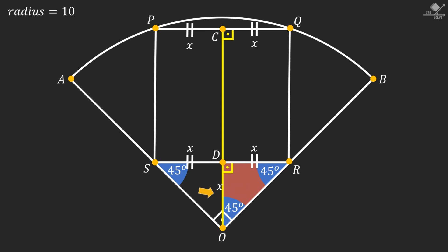That makes line segment DO also X units. We know that side length of the square is 2X units. So line segment CD will also be 2X units.